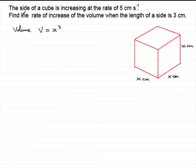We're asked to find the rate of increase of the volume when the length of a side is 3 cm. In other words, I would encourage you to put down what it is that you've got to find. We've got to find the rate of change of volume dV/dt.